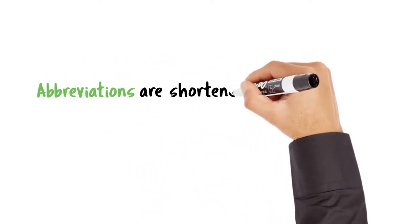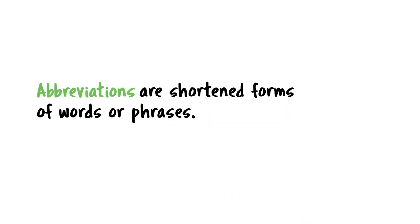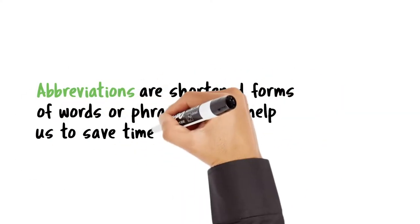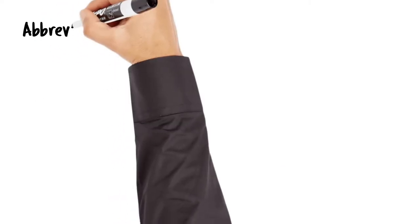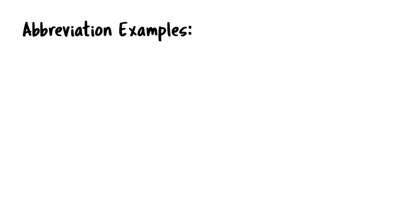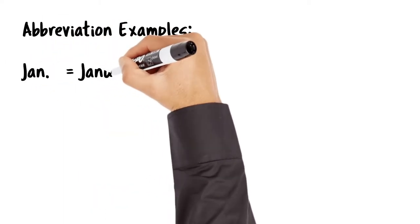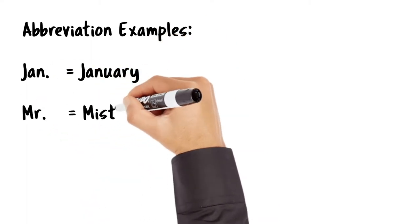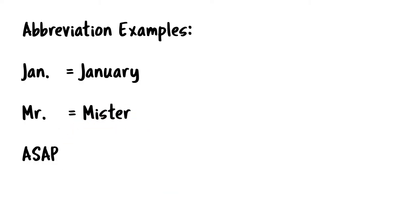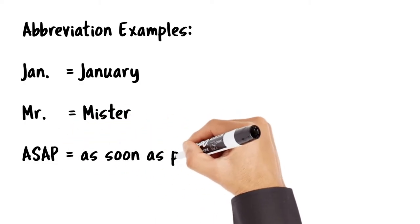Today's lesson is about abbreviations. Abbreviations are just shortened forms of words or phrases. We use them to save time, space, or both. You're probably already familiar with a lot of them, such as J-A-N period for January, M-R period for Mr., and A-S-A-P for as soon as possible.